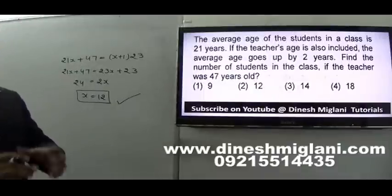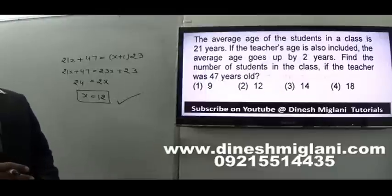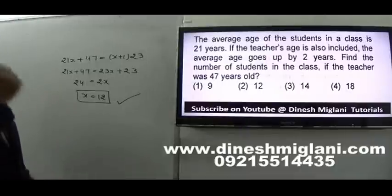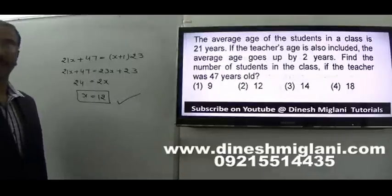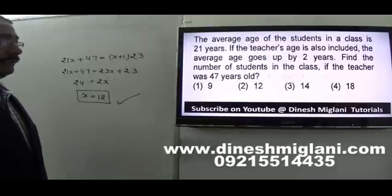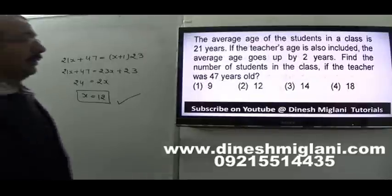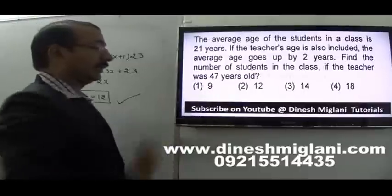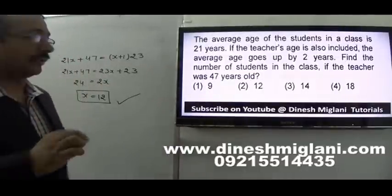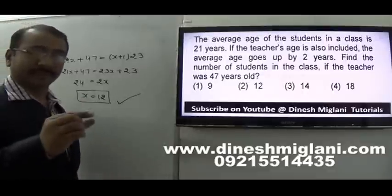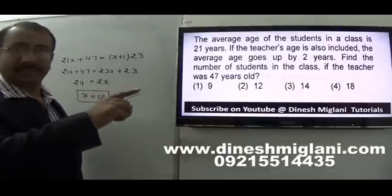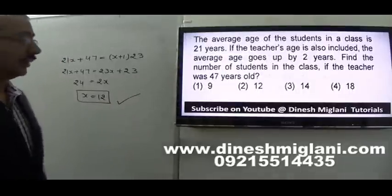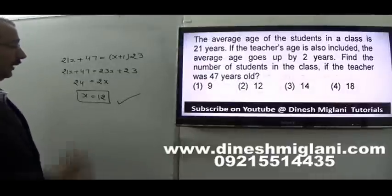Total students in the class are equal to 12. There is also a standard shortcut approach: the teacher's age is 47, new average is 23, so the difference is 47 minus 23 equals 24. This excess of 24 is distributed equally among all students raising the average by 2, so 24 divided by 2 equals 12. Either way, the answer is 12 students.